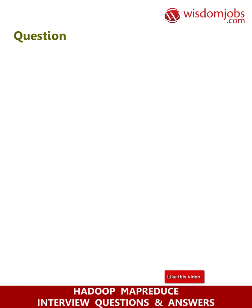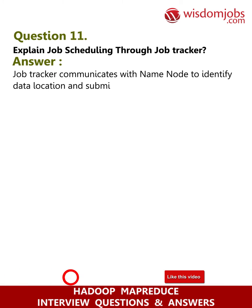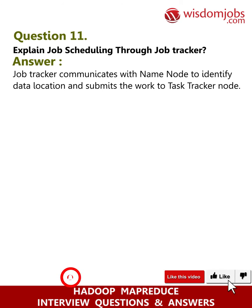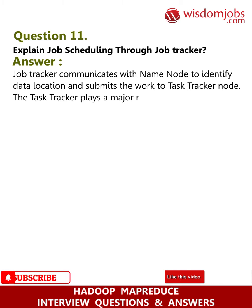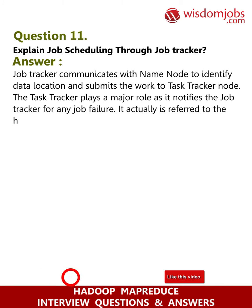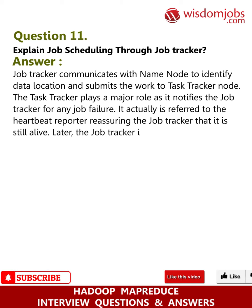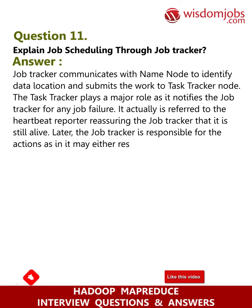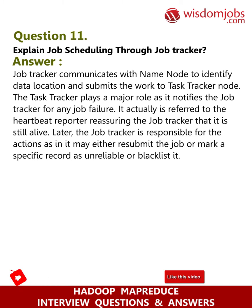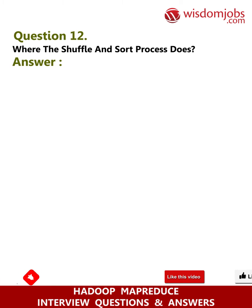Question 11: Explain job scheduling through the job tracker. Answer: The job tracker communicates with the name node to identify data location and submits the work to the task tracker node. The task tracker plays a major role as it notifies the job tracker of any job failure via the heartbeat reporter, reassuring the job tracker that it is still alive. The job tracker may then resubmit the job or mark a specific record as unreliable or blacklisted.